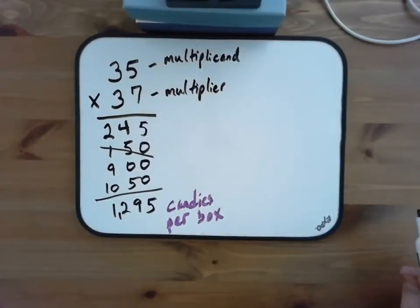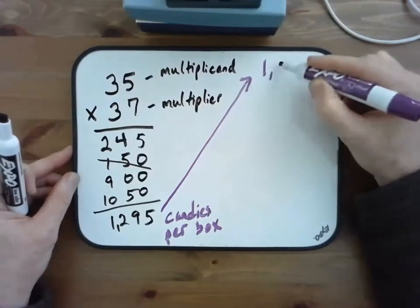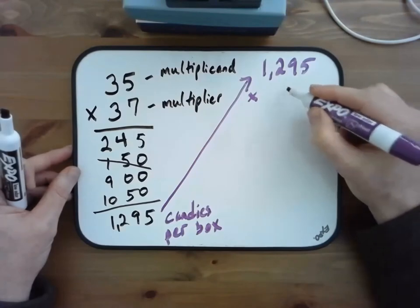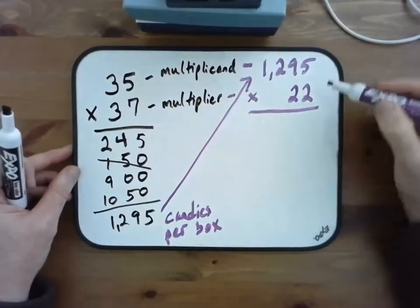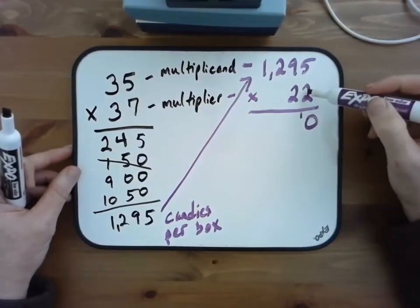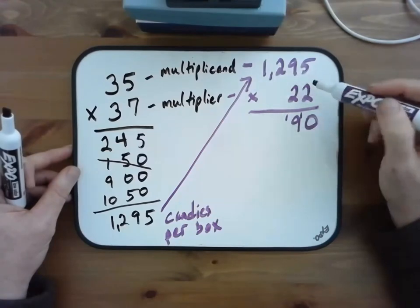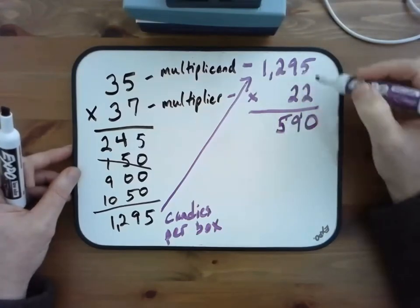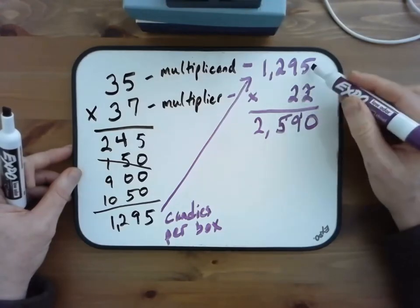But we got 22 boxes, so we need to take that 1,295 as our new multiplicand, and we're going to multiply that times 22 — the grocery store got 22 boxes. So 1,295 is our new multiplicand and 22 is our new multiplier. We'll start with the 2 in 22 and multiply by 1,295. 2 times 5 is 10. 2 times 90 is 180. 180 plus 10 is 190. 2 times 200 is 400, plus the 190 is 590 so far. And then 1,000 times 2 is 2,000. Now we're finished with the 2, so we need to work with the 20.